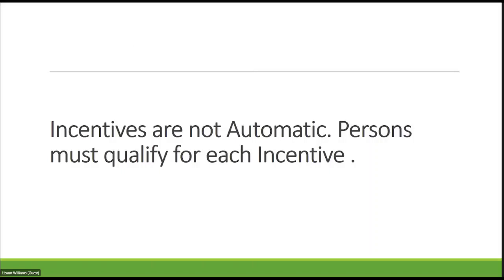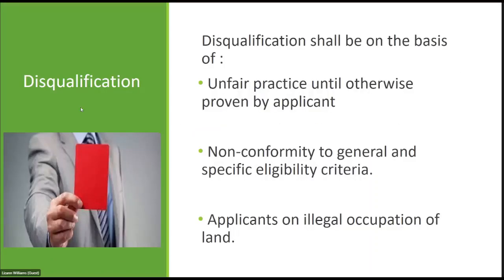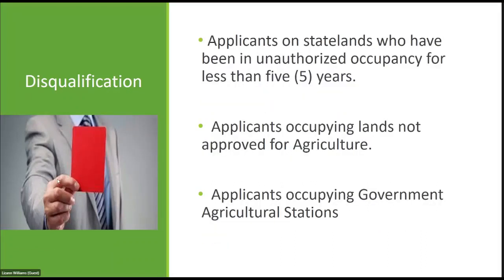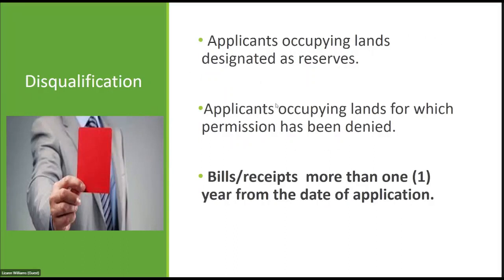Incentives can also be disqualified. Disqualification shall be on the basis of unfair practice, non-conformity to general and specific eligibility criteria, applicants on illegal occupation of land, applicants on state lands who have been in unauthorized occupancy for less than five years, applicants occupying lands not approved for agriculture, applicants occupying government agriculture stations, applicants occupying lands for which permission has been denied, and bills and receipts submitted more than one year from the date of application.